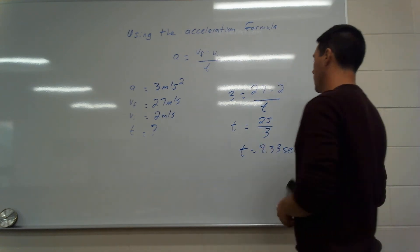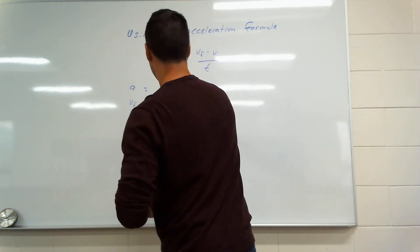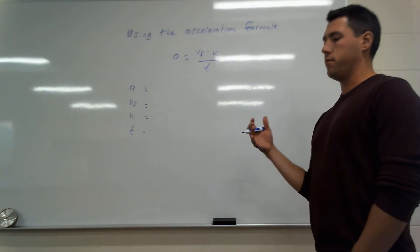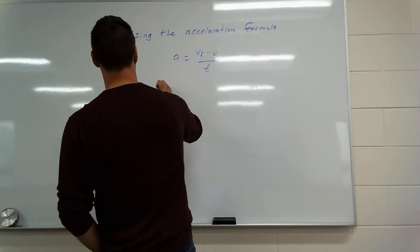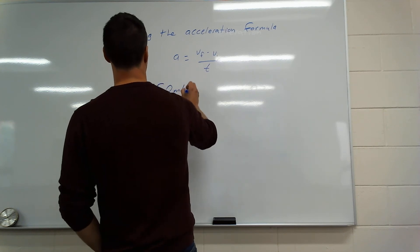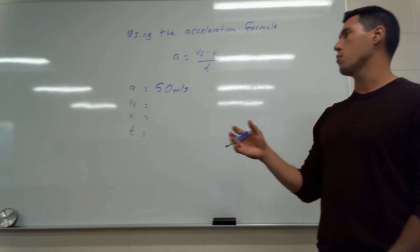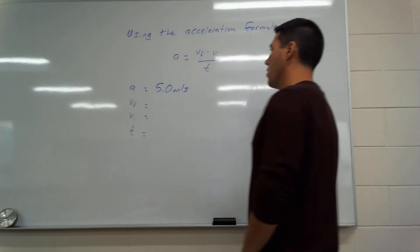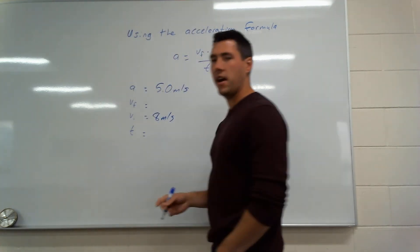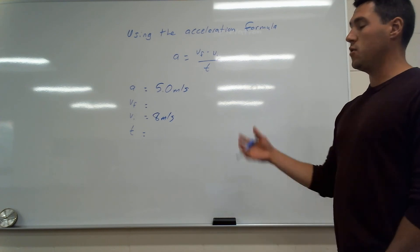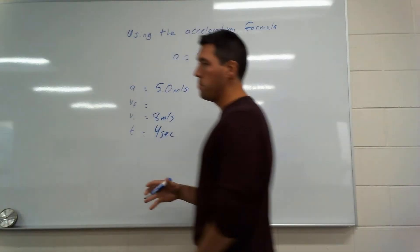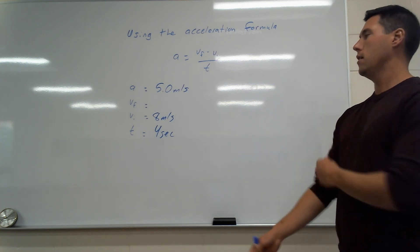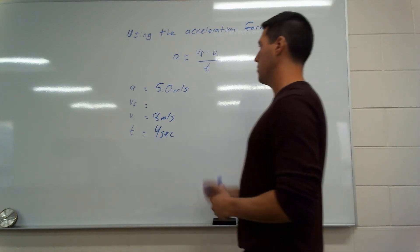Last question: finding vf. You're on a bike accelerating at 5 meters per second squared, starting at vi equals 8 meters per second. Maybe you see the ice cream truck and you accelerate hard for 4 seconds. We need to find the final velocity vf.